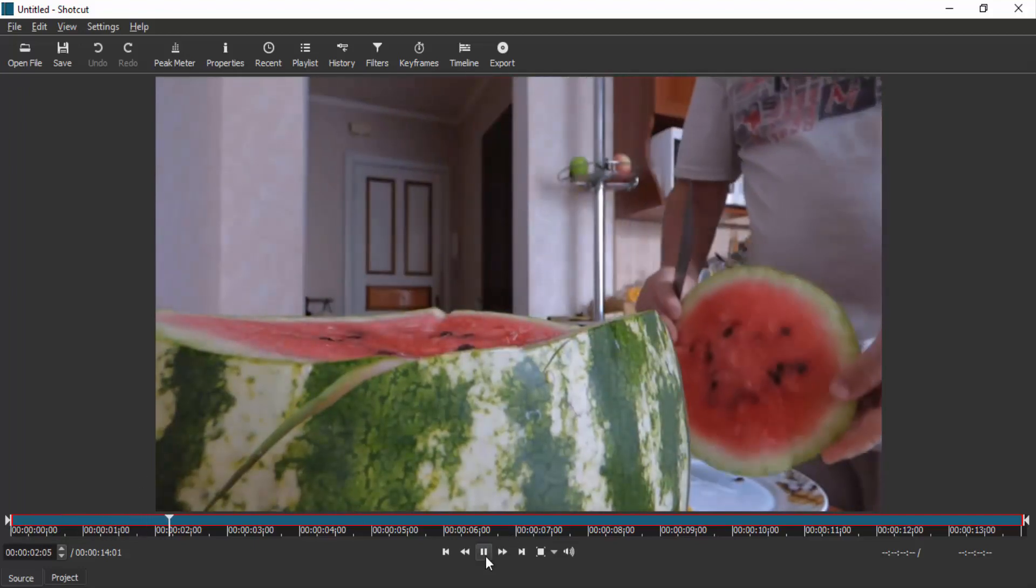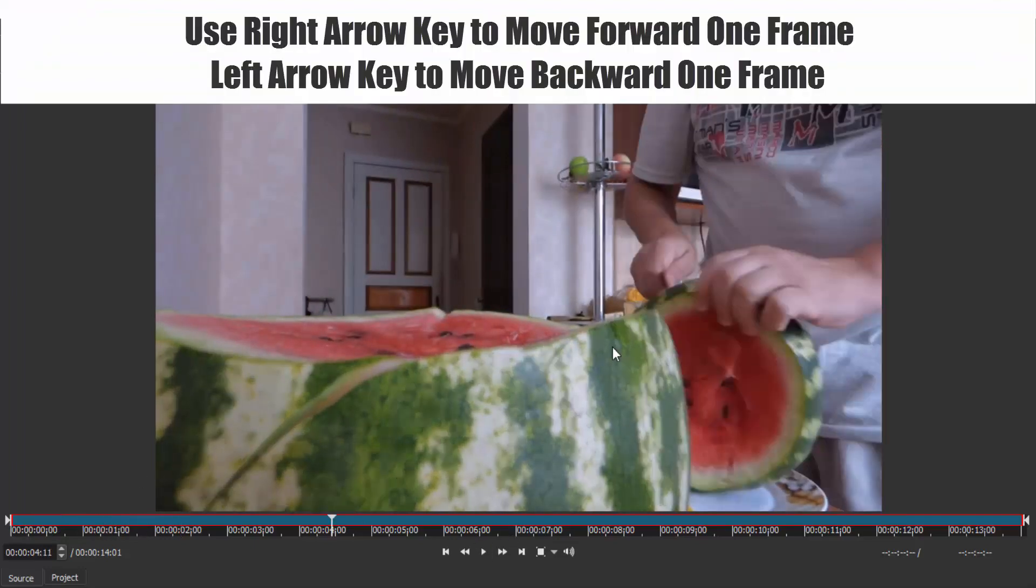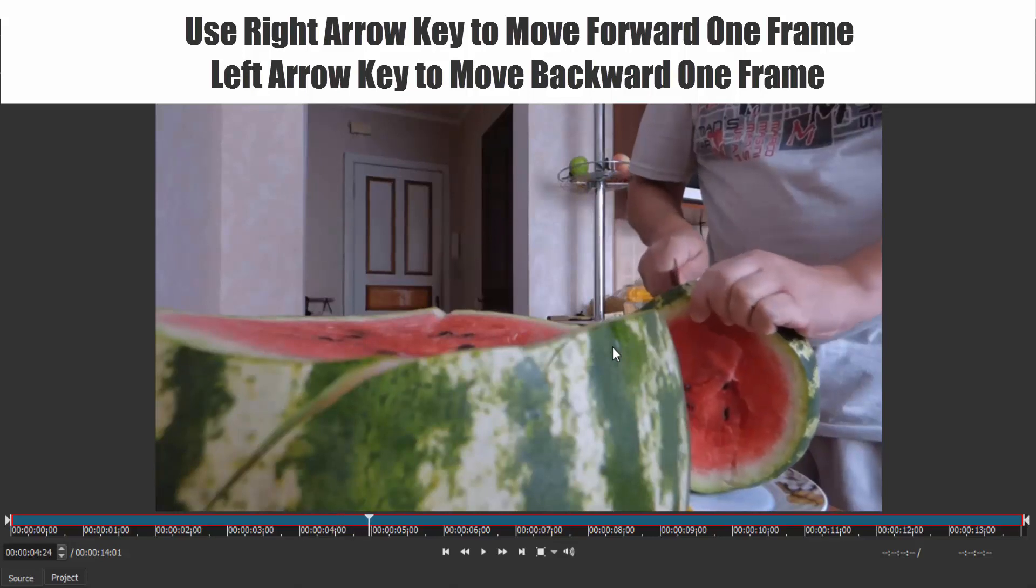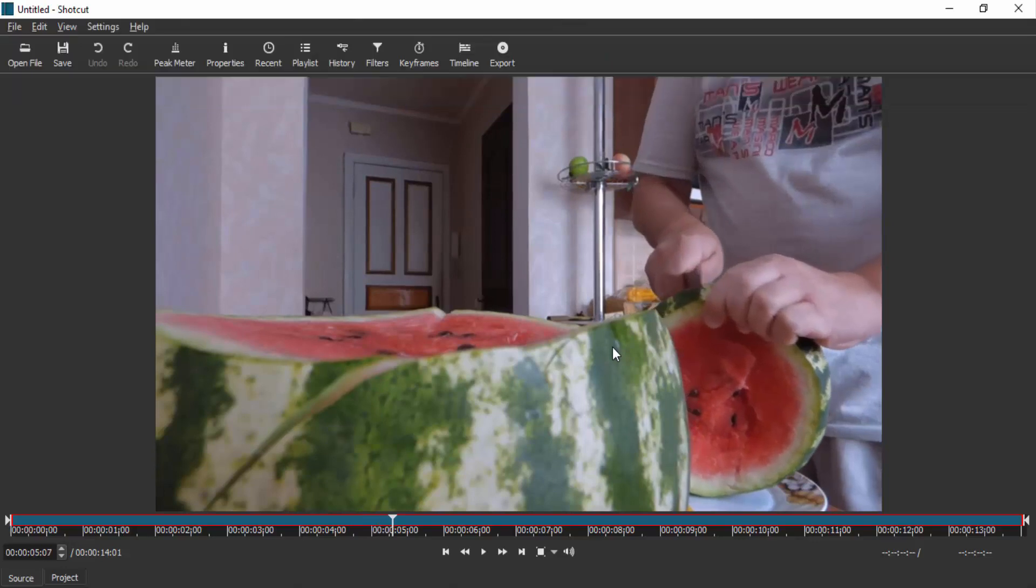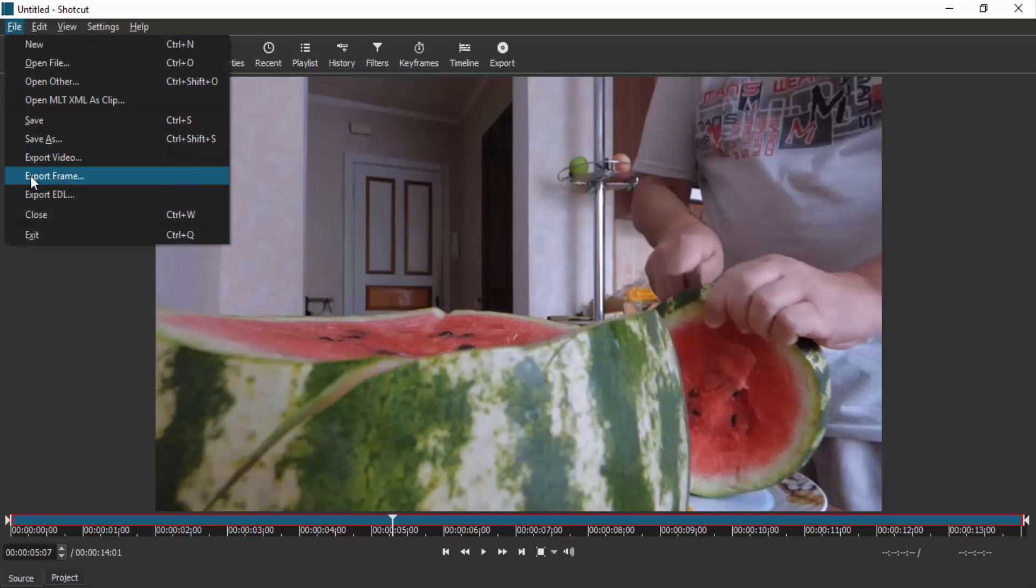Use your right arrow key to move forward and left arrow key to move backward. Go to the frame you need to capture. Let's say I'm going to capture this frame. Then go to File, Export Frame.